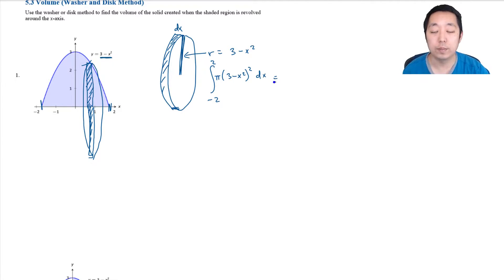And so this, you can't do as a u substitution, but you can do as an expansion. So this would be ∫ from -2 to 2 of π(9 - 6x² + x⁴)dx. And so this, I factor out a π. This would be π(9x - 2x³ + (1/5)x⁵) from -2 to 2.